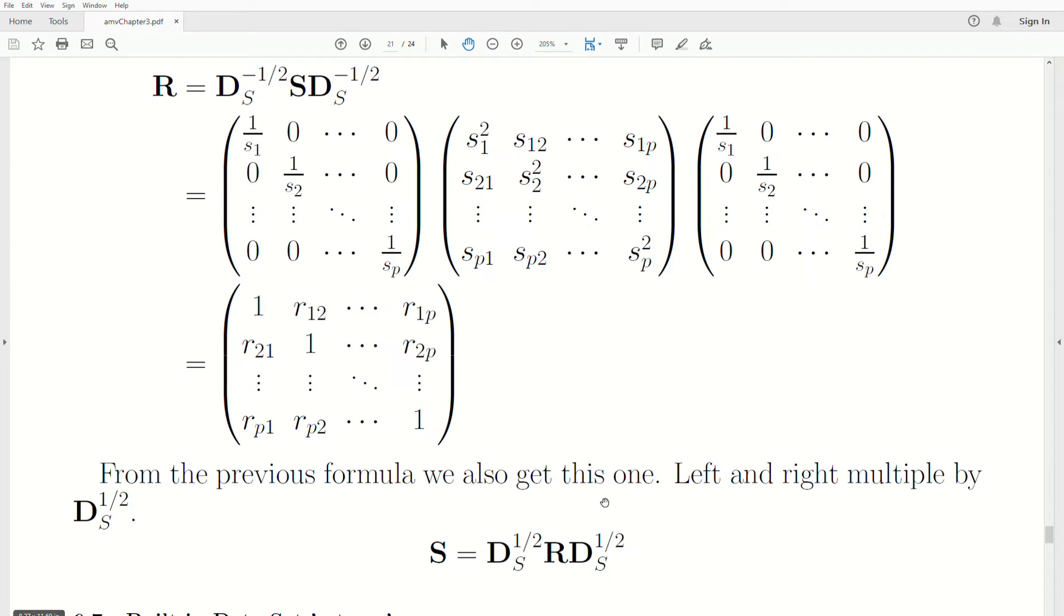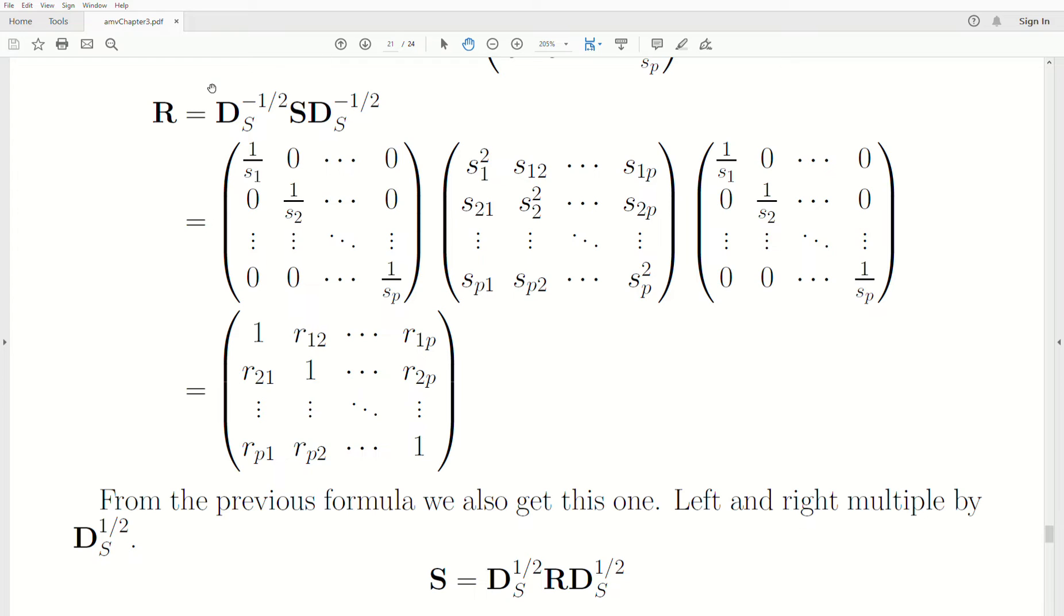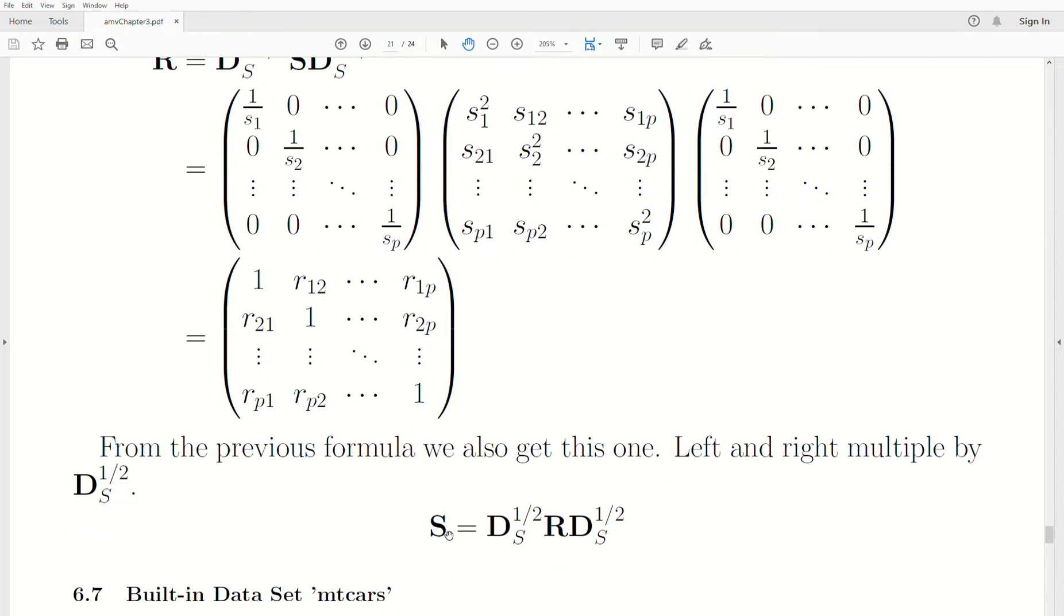From the previous formula, we also get this one. If we left multiply by the square root matrix and right multiply by the square root matrix, we get a formula for just S. So the sample covariance matrix can be thought of as a function of the sample correlation matrix.